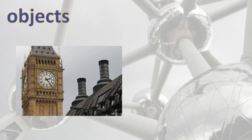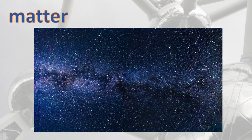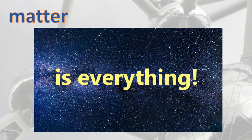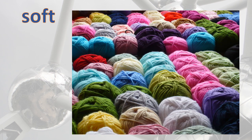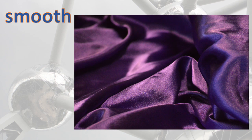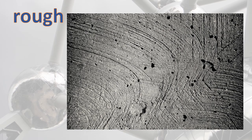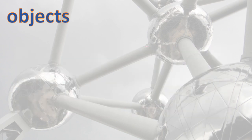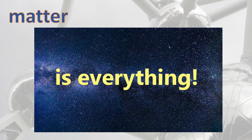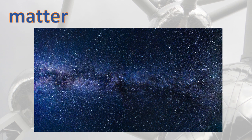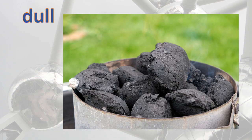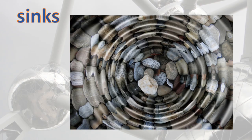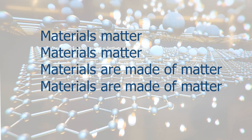Objects are things, a clock, a TV. Matter makes them up — all things, you and me. Some materials are hard, some are soft, some are smooth, and some are rough. Objects are things, like a clock, a TV. Matter makes them up — all things, you and me. Some materials are shiny, and some are dull. Some float, some sink like a stone. Materials matter. Materials matter. Materials are made of matter. Materials are made of matter.